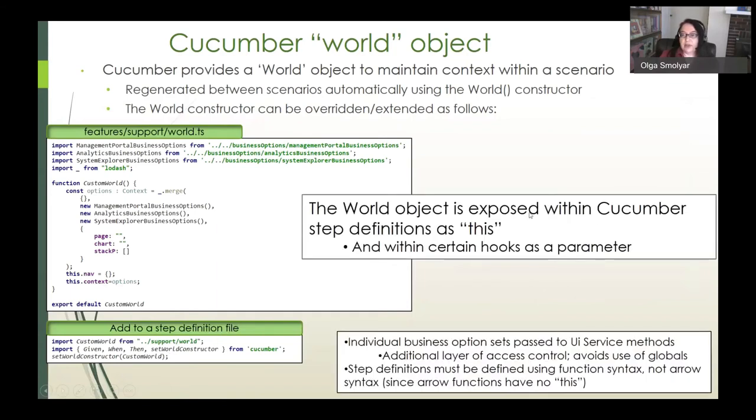For a closer look at the cucumber world object, this is provided to maintain context between and among steps within a scenario. This is needed because for instance if one step appends a timestamp to a unique entity that's being created, other steps will be able to have access to that same timestamped value using the world object. This gets regenerated automatically by cucumber using the world constructor which can be overridden or extended. The world object is exposed within cucumber step definitions as the this keyword and also within certain hooks as a parameter but it's not accessible anywhere else in the code such as the page object hierarchy. So individual business option sets get passed by step definitions to UI service methods which provides an additional layer of access control and avoids the use of globals. Another result of this is that step definitions must be defined using function syntax not arrow syntax in order to use cucumber world because arrow functions don't have a this keyword.